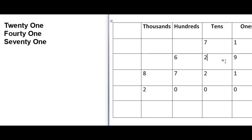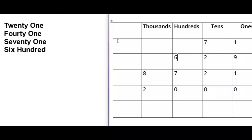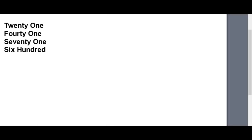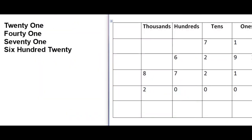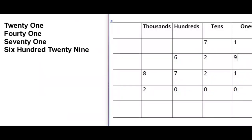Now come to 3 digits. This is 629. 9 is in the 1's place, 2 is in the 10's place, and 6 is in the 100's place. So we start from 6 — 6 is in the 100's place, so we can call this 600. Then 2 is in the 10's place, so we write 20. And 9 is in the 1's place, so it will be simply 9. So this number we can write in words as 629.